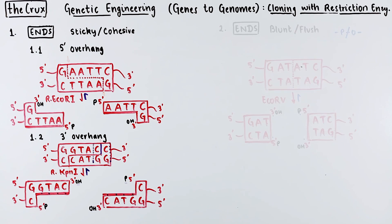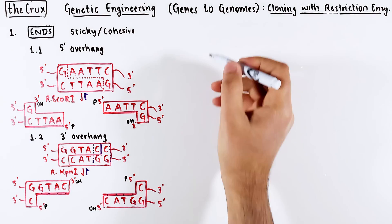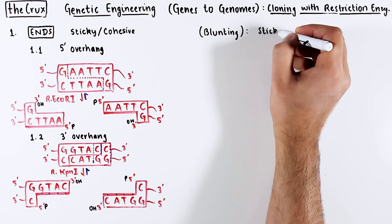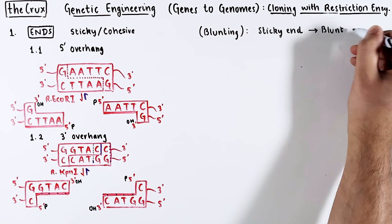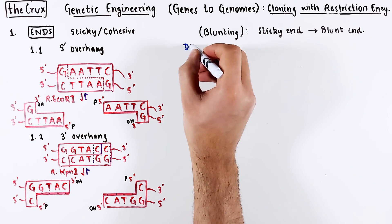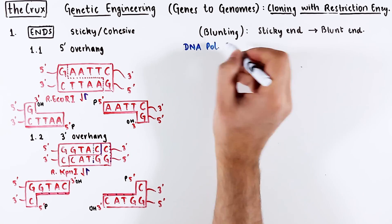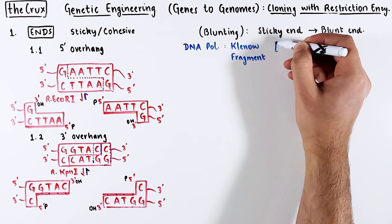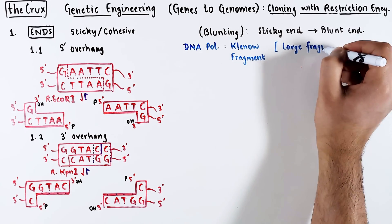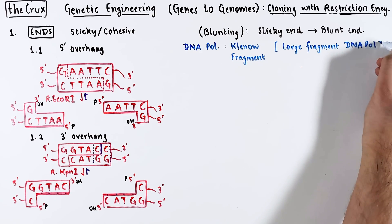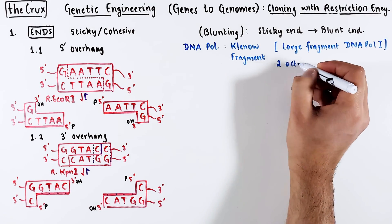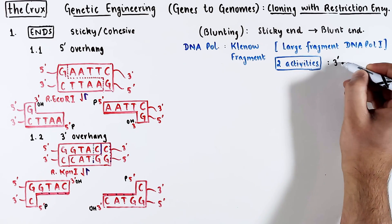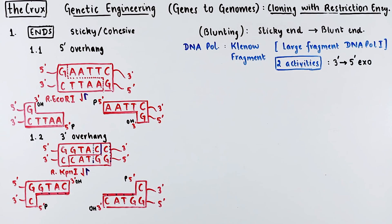Before we dive into the levels of molecular cloning, you should know about a cheat code called blunting. This is the process of converting a sticky end to a blunt end. The enzyme used is a polymerase called Klenow fragment. If you recall DNA replication, Klenow is the large fragment of DNA polymerase 1. Klenow does two things: the 3' to 5' digestion, also known as the proofreading activity, and the other is 3' extension.